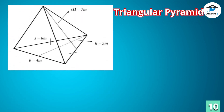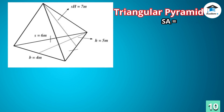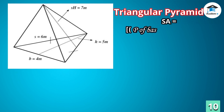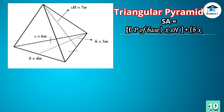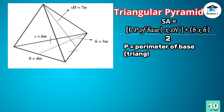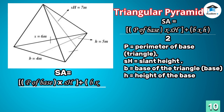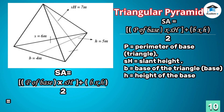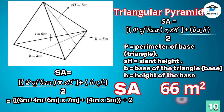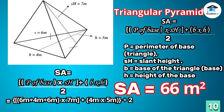Triangular pyramid: to get the surface area of a triangular pyramid, get the perimeter of the triangular base, multiply it by the slant height of the pyramid, then add the product of the base and height of the triangular base, and finally divide by two. Therefore, the surface area of the triangular pyramid is 66 square meters.